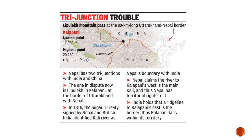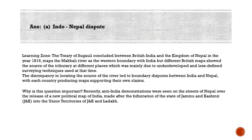The Treaty of Sugauli was signed between the Gurkha rulers of Kathmandu and the East India Company after the Anglo-Nepal War (1814–1816). According to the treaty, Nepal lost the regions of Kumaon and Garhwal in the west and Sikkim in the east. The King of Nepal gave up claims to the region west of the river Kali. The British recognized Nepal's right to the region east of river Kali — and that dispute is still ongoing.